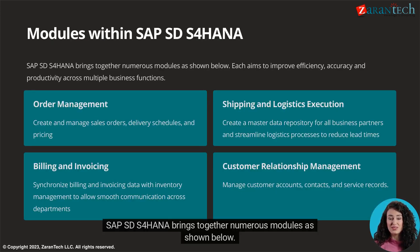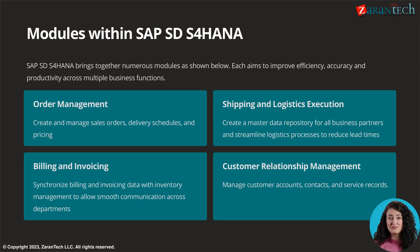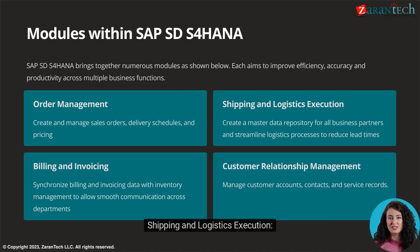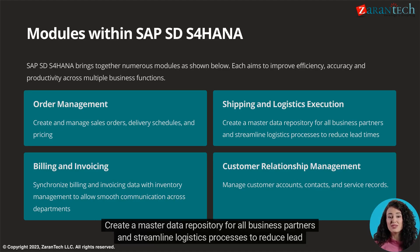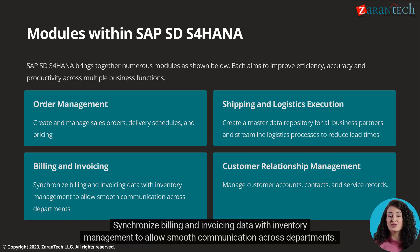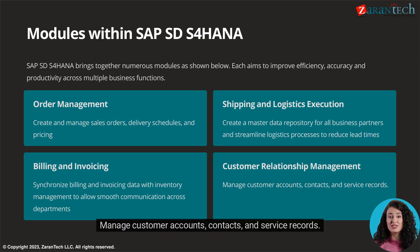SAP S/4 HANA brings together numerous modules as shown below. Each aims to improve efficiency, accuracy, and productivity across multiple business functions: order management — create and manage sales orders, delivery schedules, and pricing; shipping and logistics execution — create a master data repository for all business partners and streamline logistics processes to reduce lead times; billing and invoicing — synchronize billing and invoicing data with inventory management to allow smooth communication across departments; customer relationship management — manage customer accounts, contacts, and service records.